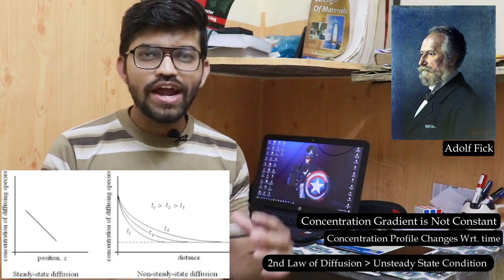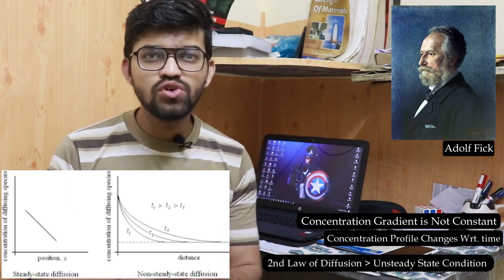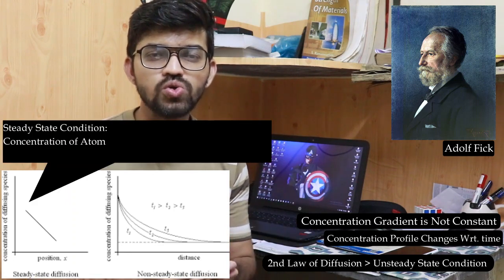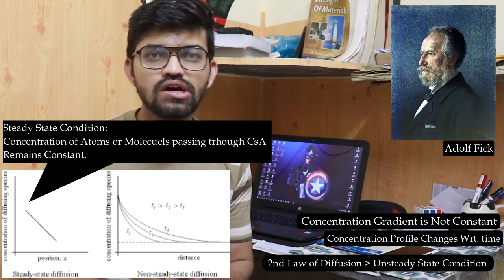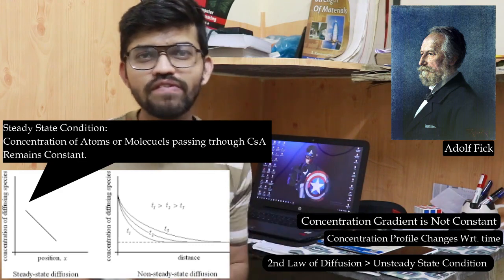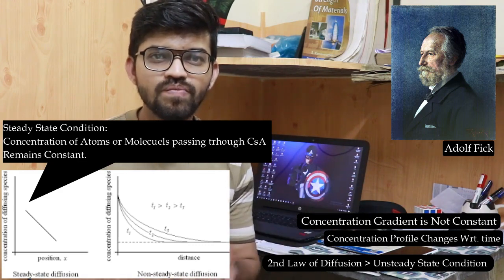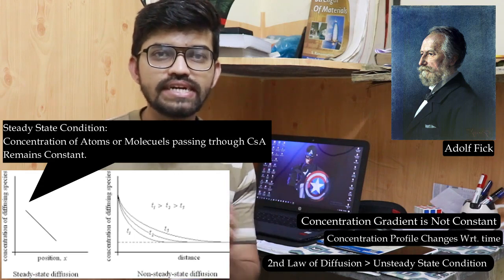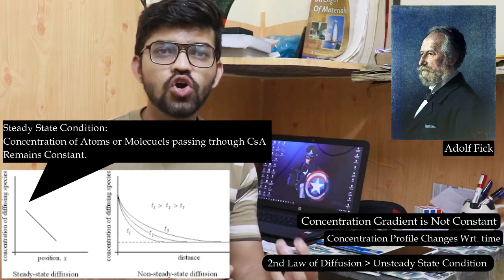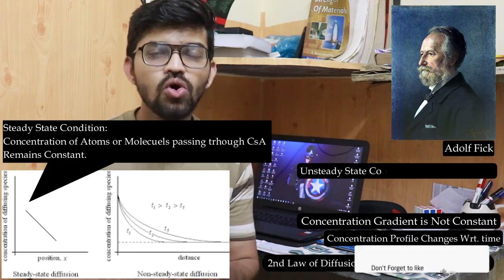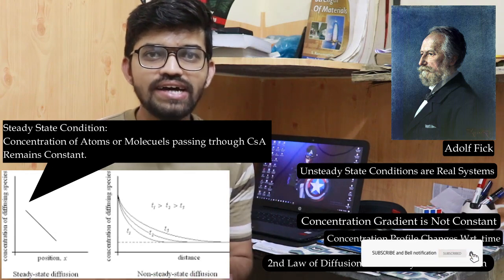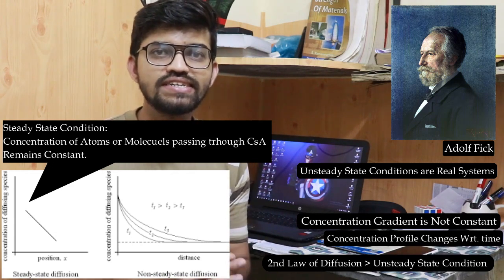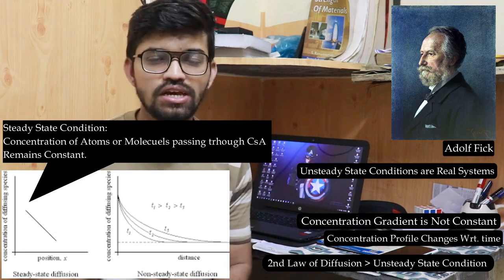In the case of steady state diffusion, the concentration of atoms or molecules passing through the cross-sectional area remains constant, as we saw in our previous video. Here, we are talking about unsteady state diffusion — the real-world scenario — where the condition is time-dependent.